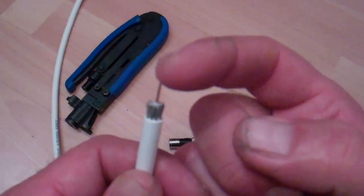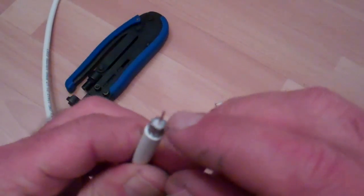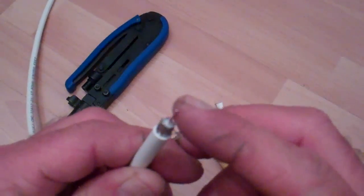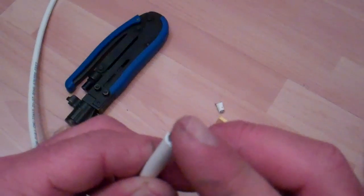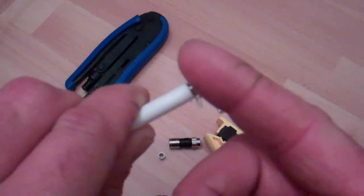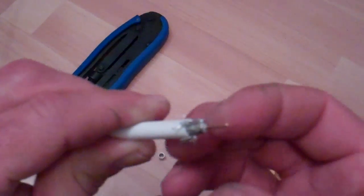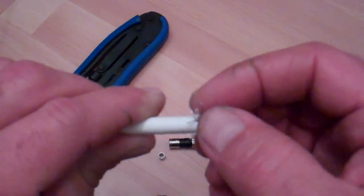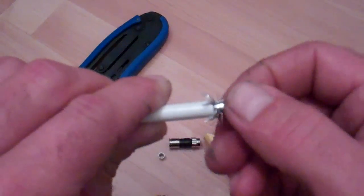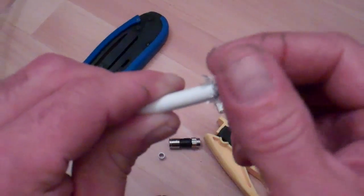So now what we see is we have the conductor in the middle here, our insulation, which is the white part, and then we have our outside braided wire. So I'm going to move this, take that braided wire, push it back over the end of the coax.